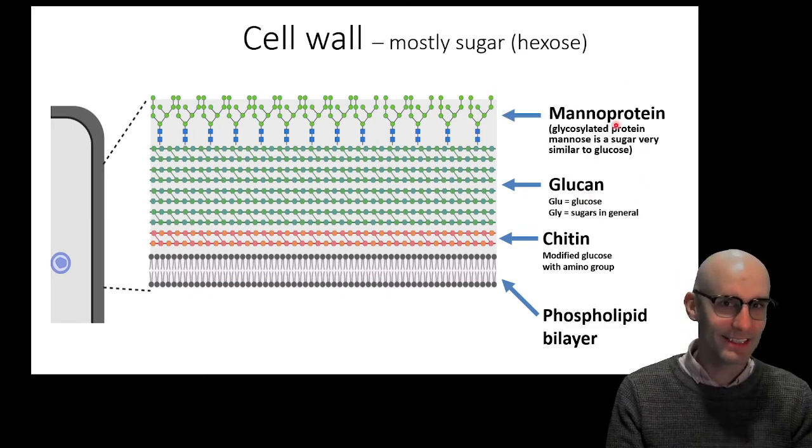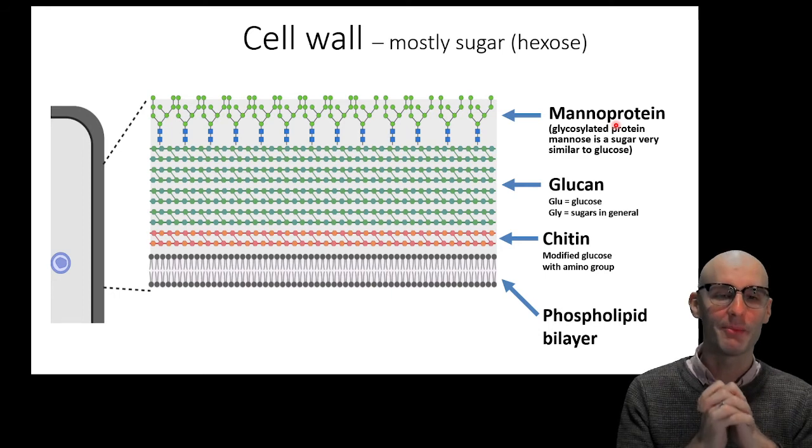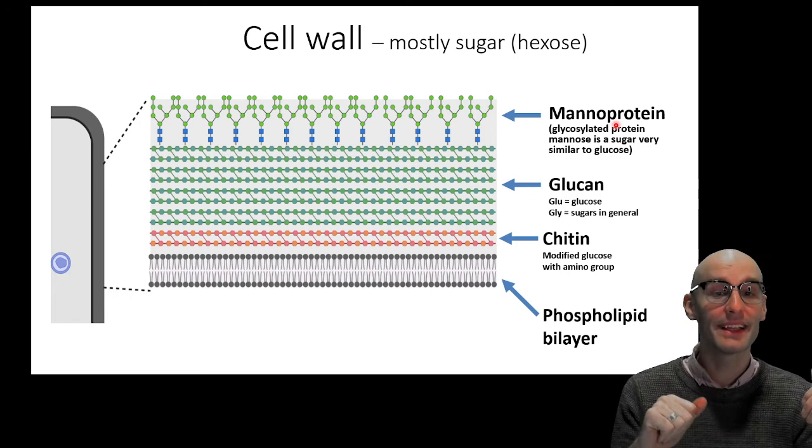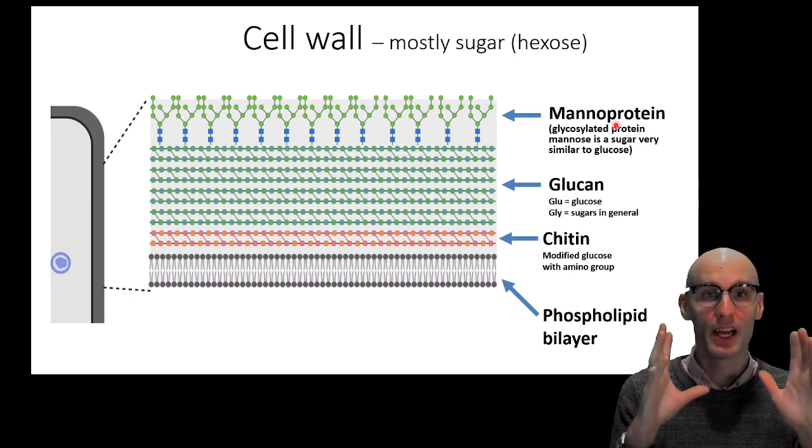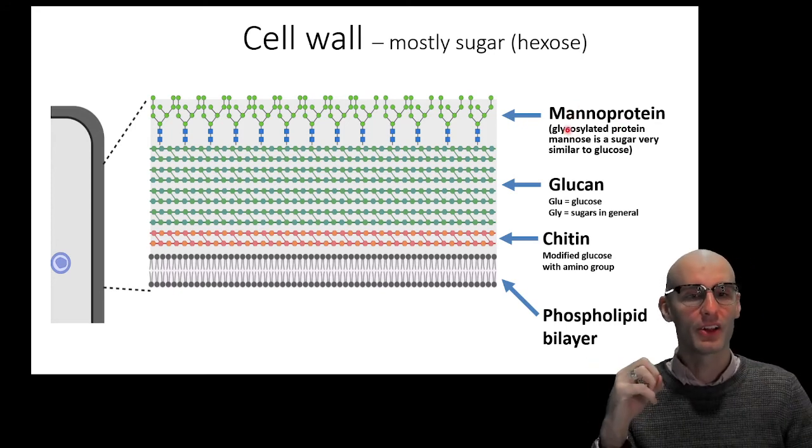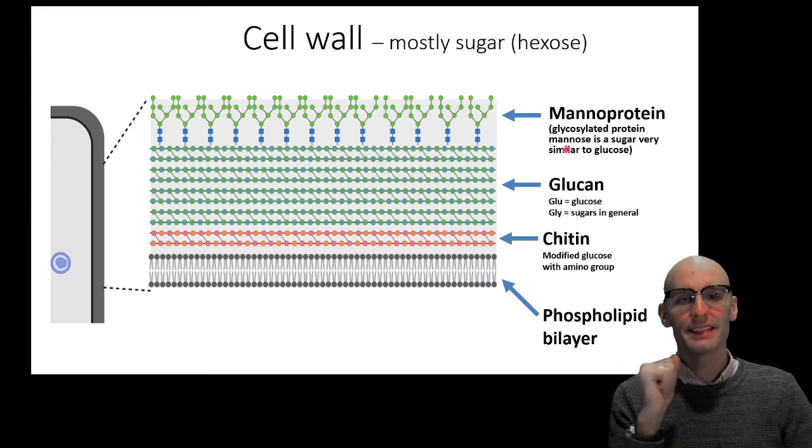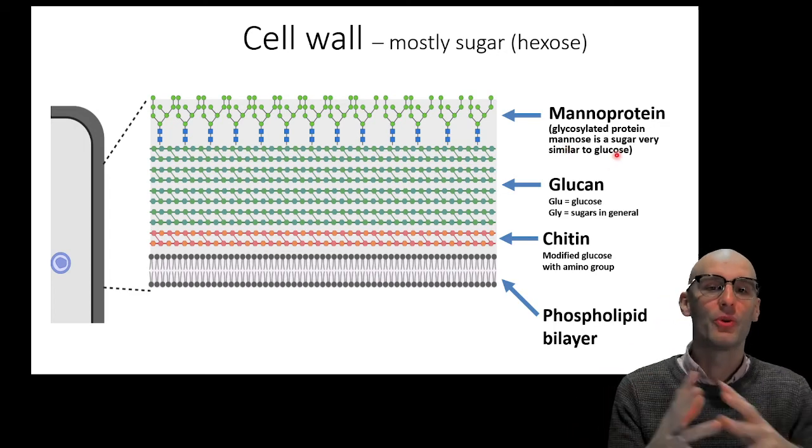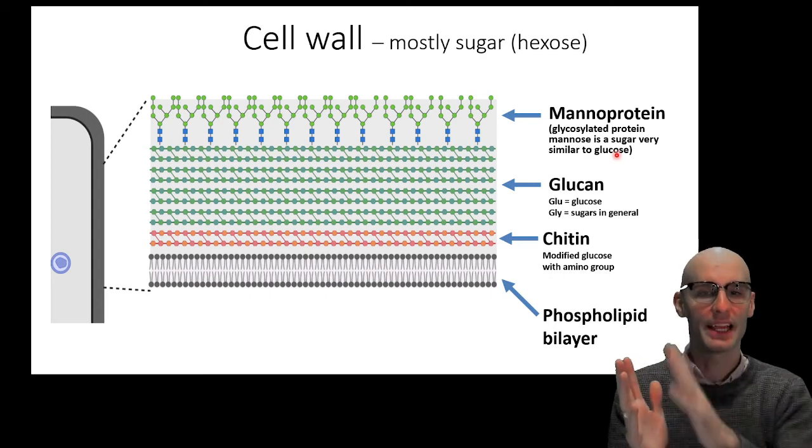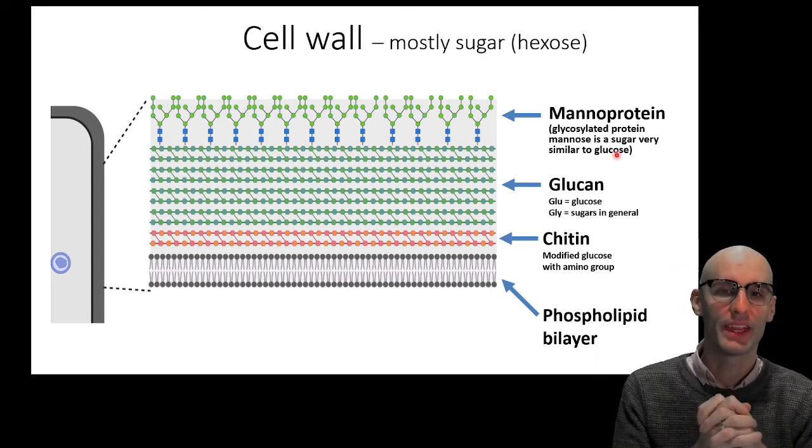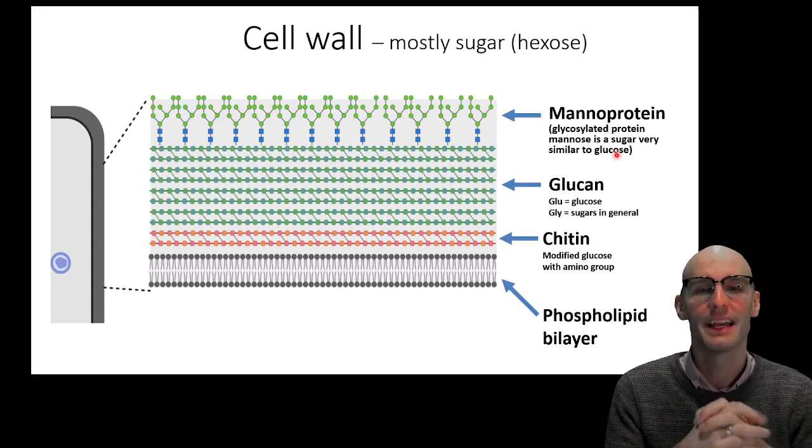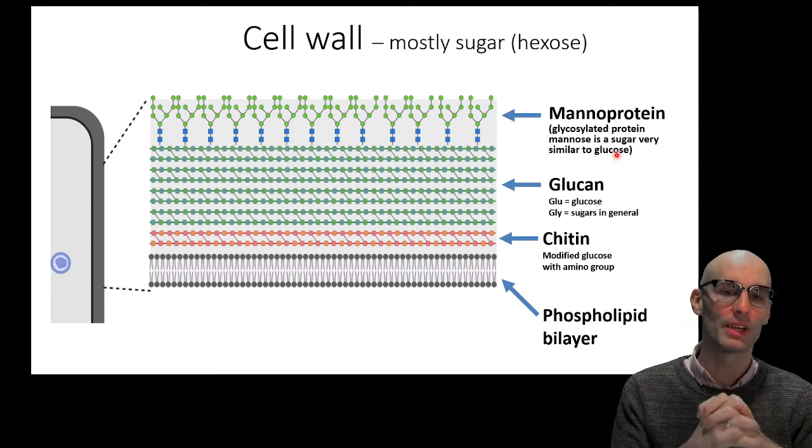And up the top here, this is the exception. It's not glucose. So this is a mannoprotein. And so this is just a glycosylated protein. There's that word gly again, which means sugars, not just glucose, but a range of sugars there. So gly can refer to any sugar. And in this case, it refers to the sugar mannose. So we've got mannoprotein, which is a glycosylated protein, chains of them all along the surface of the fungus. And the sugar that's attached to those proteins is mannose. And that's why we call it a mannoprotein.